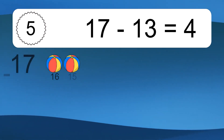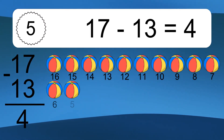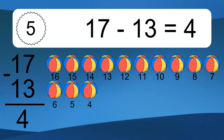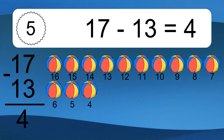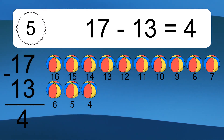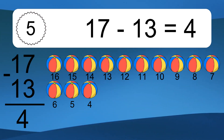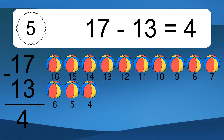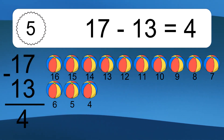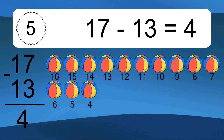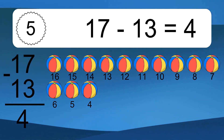17 minus 13 equals 4. Let's count it. 16, 15, 14, 13, 12, 11, 10, 9, 8, 7, 6, 5, 4.